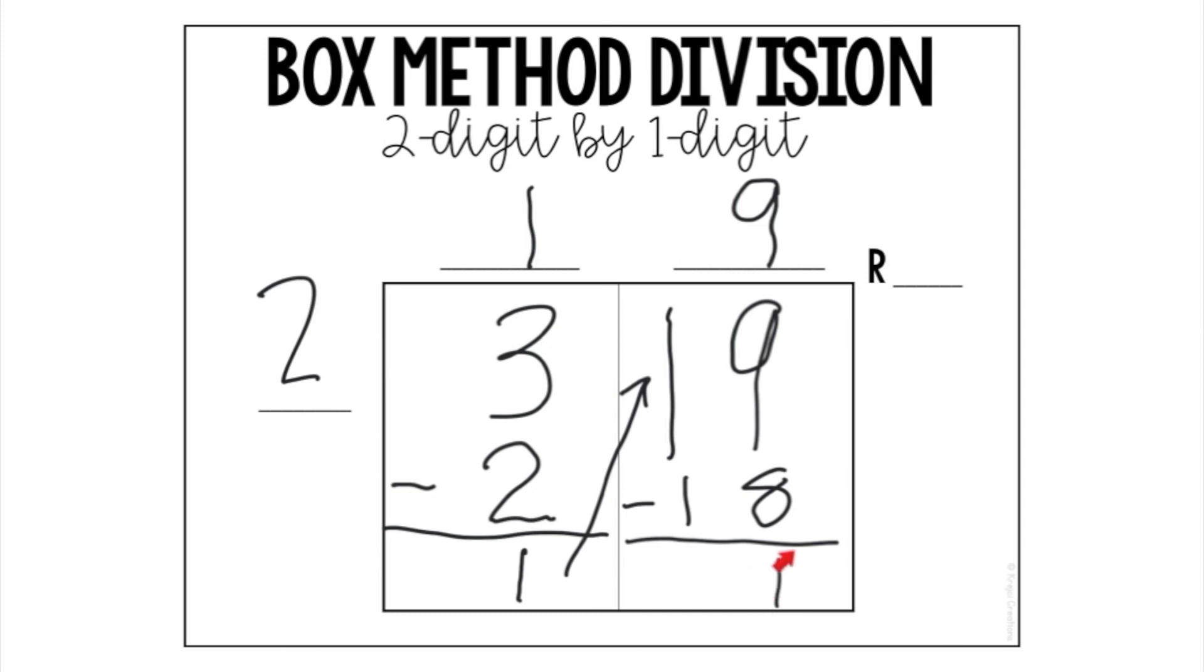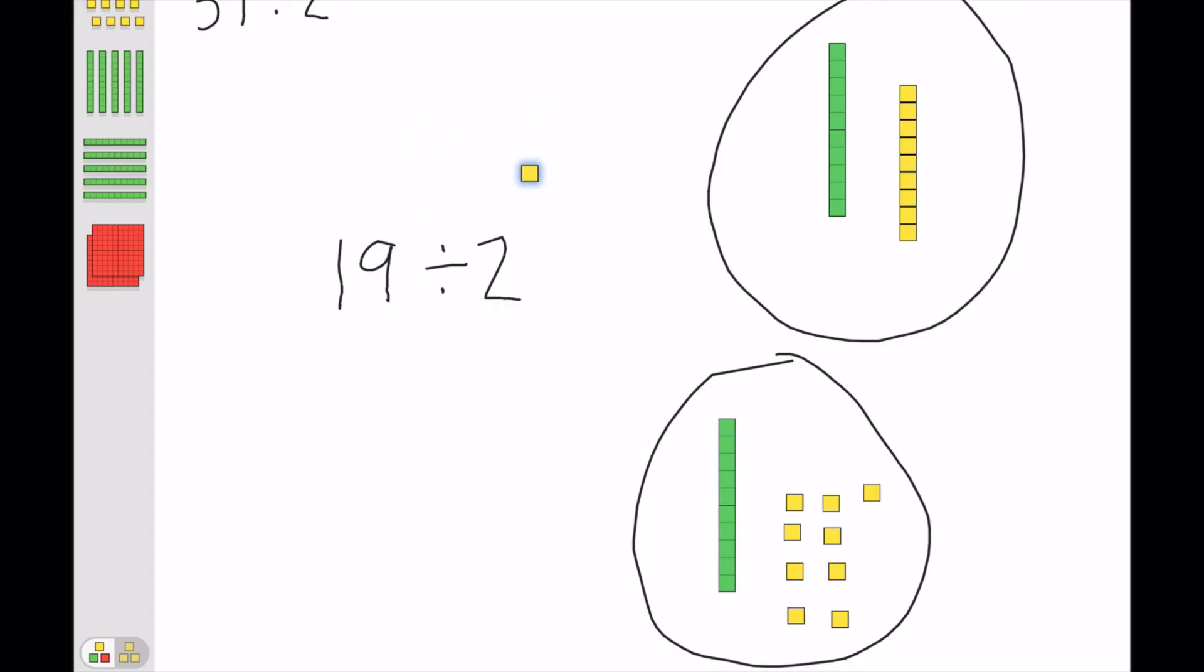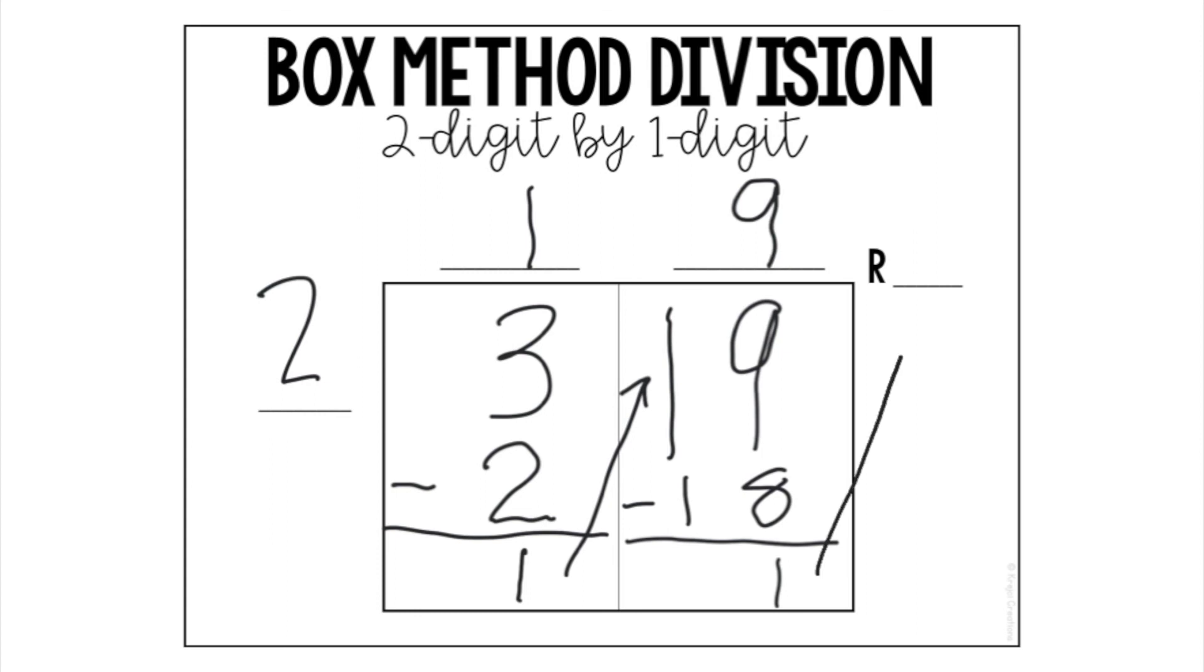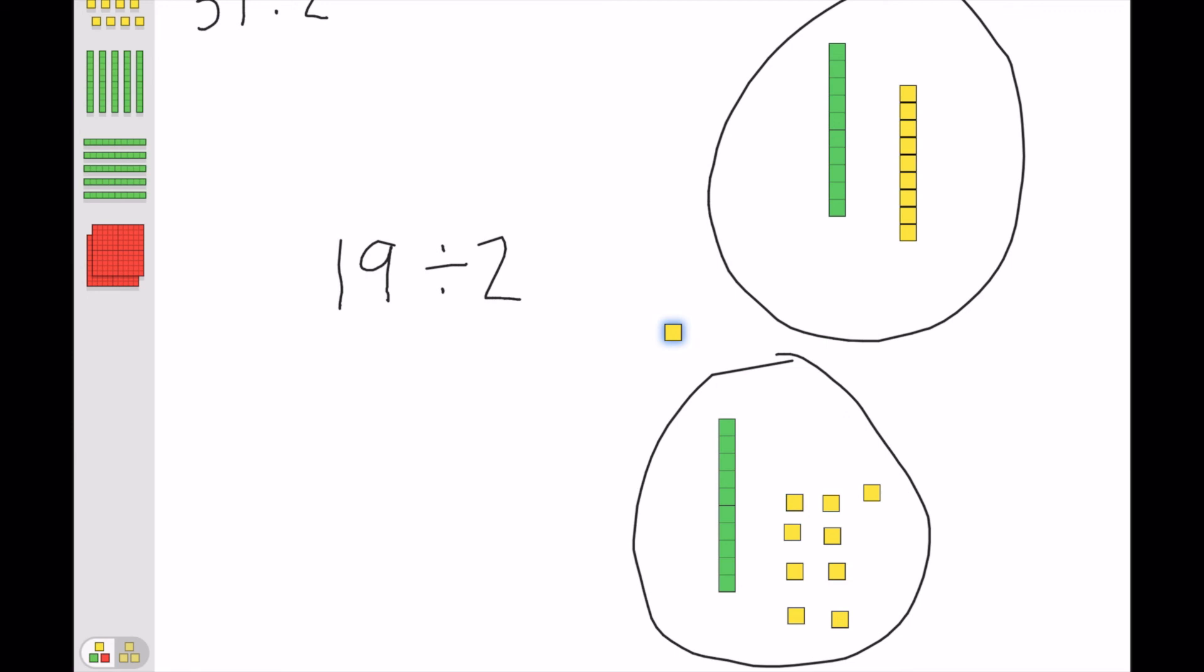And we've already talked about the leftovers. And we know that leftovers are remainders. So we saw that in our model. That there was one that we couldn't do. So what you do in the box method is you draw another arrow up to that spot right there with the R. And you just rewrite it. There's a remainder of one.